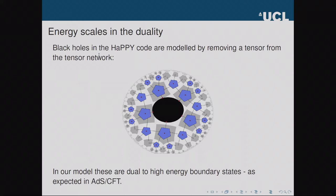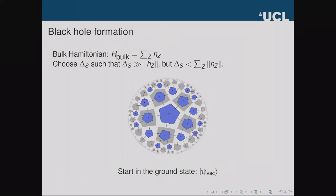I'll now discuss applications of our construction. Having a Hamiltonian gives access to energy scales, and one of the most interesting energy scales in ADS/CFT is the boundary energy scale corresponding to black holes in the bulk. The HaPPY paper suggested modeling black holes by removing a tensor from the tensor network and gave reasons why this is reasonable, but couldn't say anything about the energy scales of these black holes. We've shown that in our model, these correspond to high-energy boundary states, just as expected in ADS/CFT.